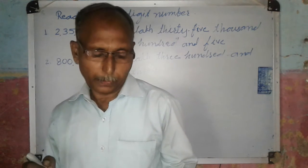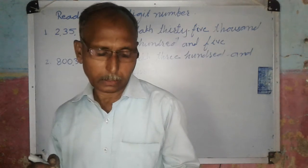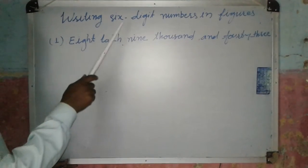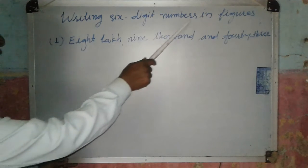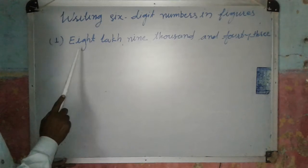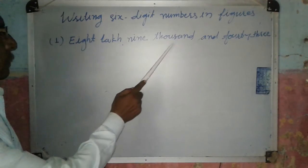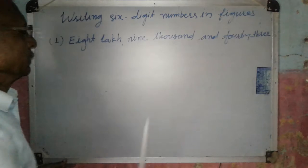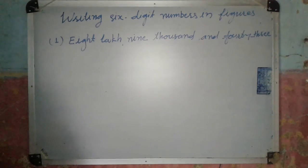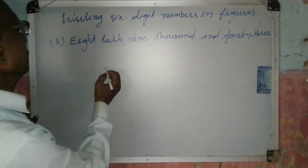Now we will learn how to write 6-digit numbers in figures. For this 6-digit number written in words — eight lakh nine thousand and forty-three — since this is a 6-digit number, there must be six places.